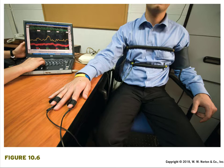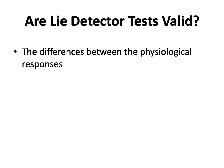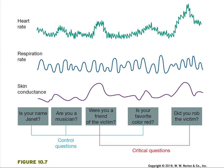A person is hooked up to a polygraph apparatus measuring heart rate, respiration, and skin conductance from sweating. The difference between physiological responses to control questions and physiological responses to critical questions is the measure used to determine whether the person is lying. A polygraph measures autonomic responses such as heart rate, respiration, and skin conductance. Differences in autonomic reactions to critical versus control questions indicate arousal, which may indicate nervousness as a result of lying. However, the arousal may instead be due to general nervousness, and thus may falsely indicate that a person is lying.